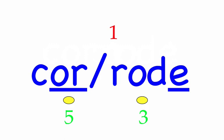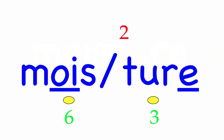Moisture. There was moisture on the grass this morning. First syllable: moist, three sounds, M-oy-S. Second syllable: ture, three sounds, T-oo-ur. Moisture — mark the word.